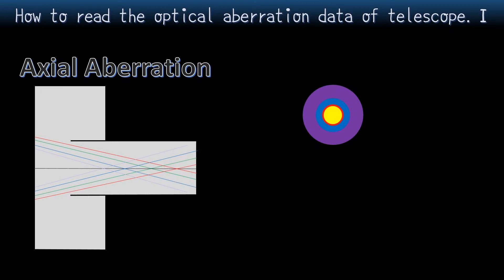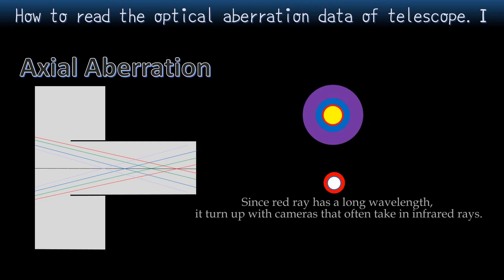Very rarely, the problem of Akaharo means red ring also arises. In passing, Akaharo occurs with overcorrection, but it can also appear with a telescope without chromatic aberration. Since red ring has long wavelength, it turns up with cameras that often take in infrared rays.